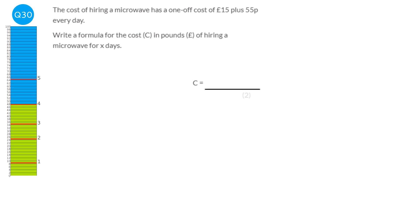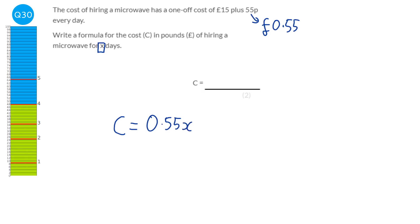We want a formula for the cost C in pounds of hiring a microwave for x days. The daily rate is 55 pence, which in pounds is 0.55. So the daily cost is 0.55x. There's also a one-off cost of £15, so adding that gives C equals 0.55x plus 15.